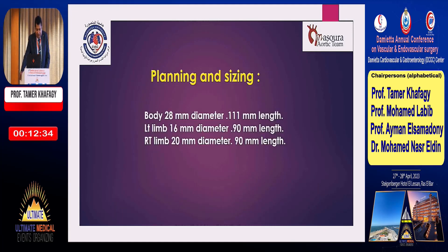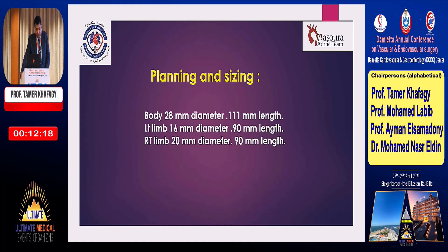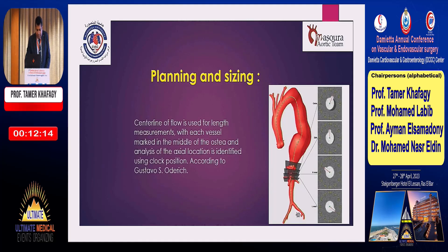For planning and sizing, we planned to use a body of 22 by 28 millimeter diameter and 111 millimeter length, left limb 16 millimeter diameter and 19 millimeter length, and right limb 20 millimeter diameter and 19 millimeter length. The central line of flow is used for length measurements with each vessel marked in the middle of the ostia.